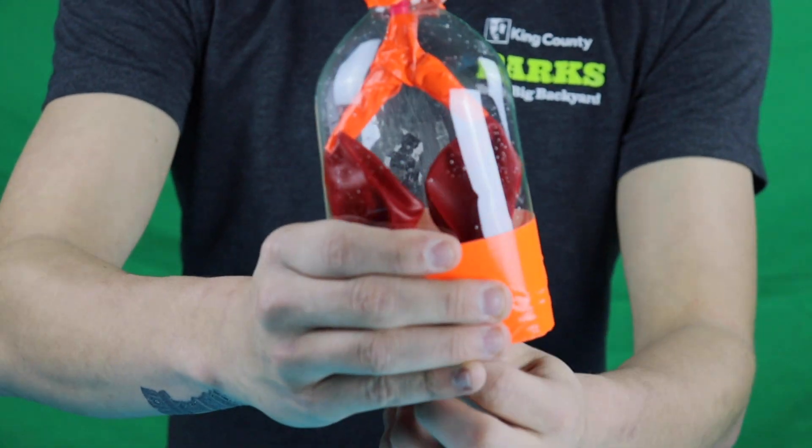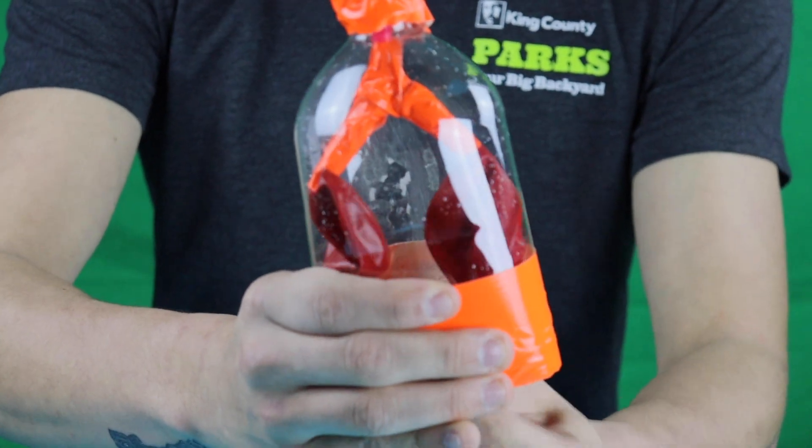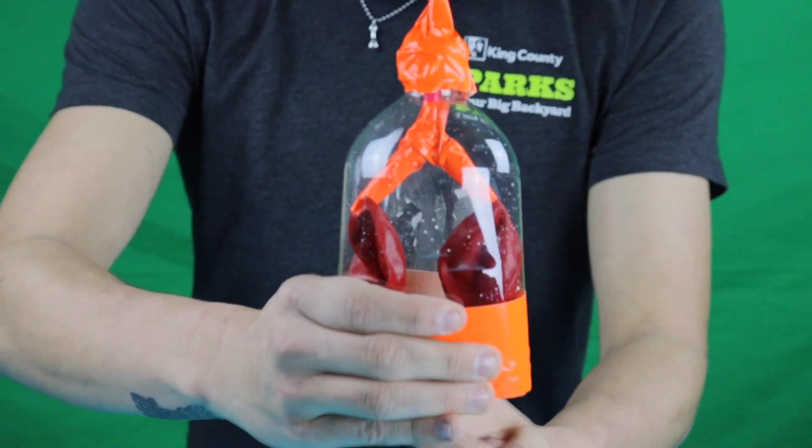So in this model, basically the concoction you just made is supposed to act as the trachea, and as you pull at the bottom of the balloon, it's supposed to represent your breathing.